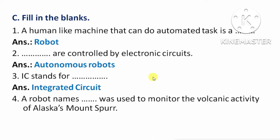Next question: a robot name was used to monitor the volcanic activity of Alaska's mountain spur. Means, उस robot का नाम जिसका प्रयोग किया जाता था Alaska mountain की volcanic activity को monitor करने के लिए। Answer: Dante Second.